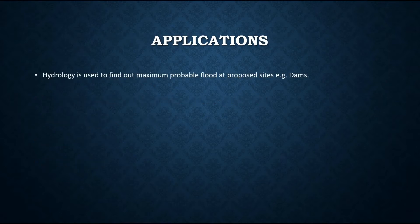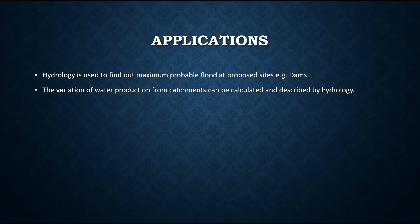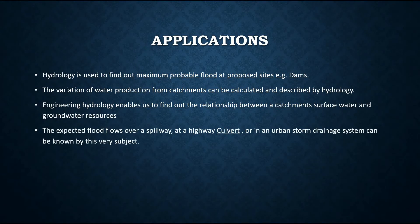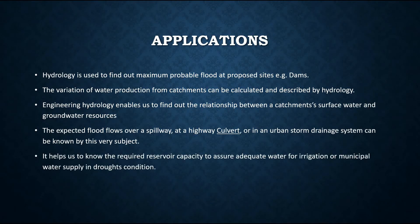Hydrology is used to find out maximum probable flood at proposed sites, for example dams. The variation of water production from catchments can be calculated and described by hydrology. Engineering hydrology enables us to find out the relationship between a catchment's surface water and groundwater resources. The expected flood flows over a spillway, at a highway culvert, or in an urban storm drainage system can be known by this subject. It helps us to know the required reservoir capacity to assure adequate water for irrigation or municipal water supply and drought conditions.